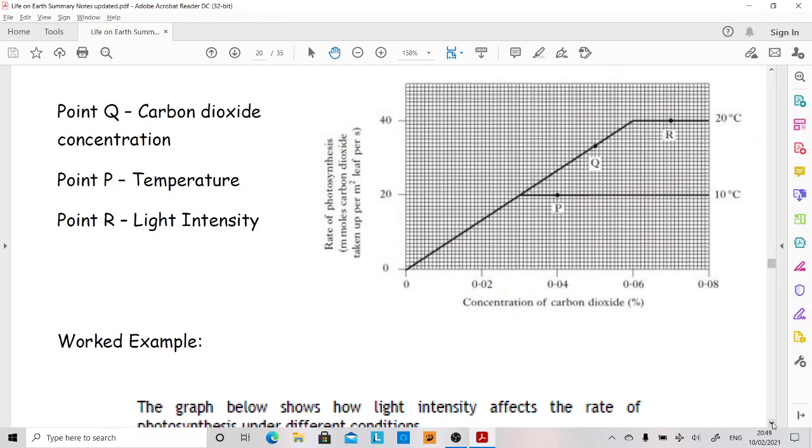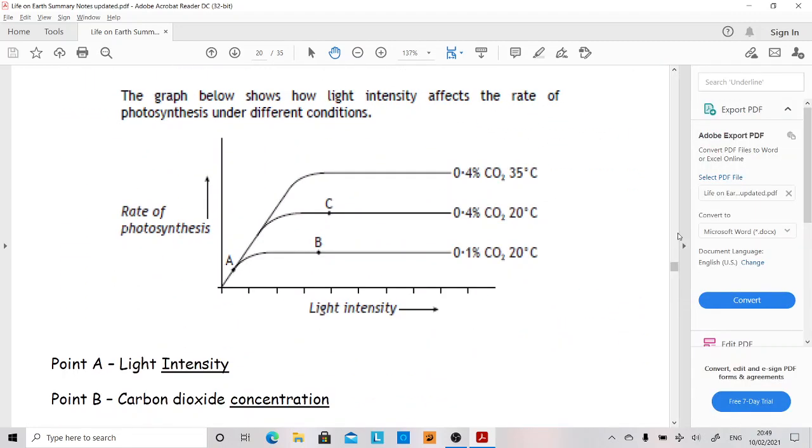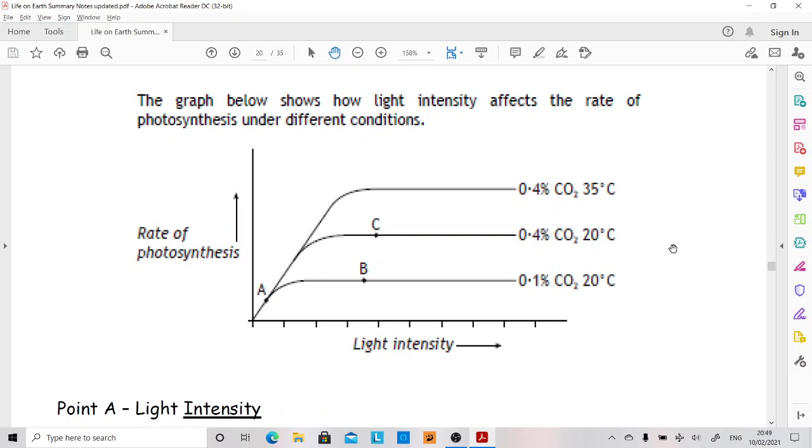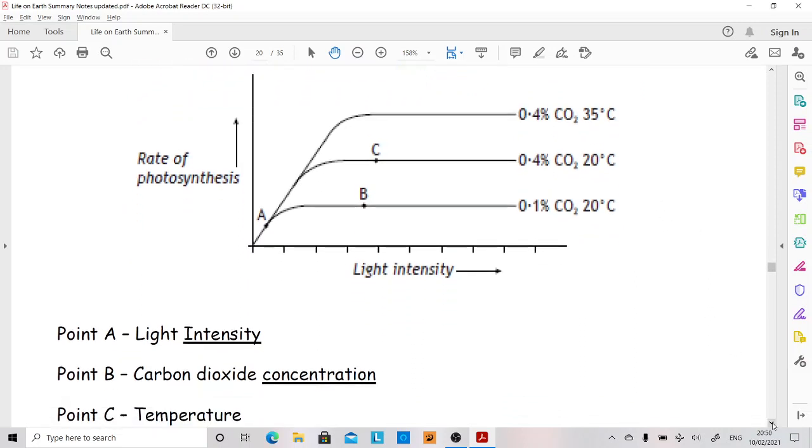This last one is the one I think is most realistic for National 5 exam question. So light intensity is increasing along the bottom. Here's the slope bit of the graph. Light intensity is the limiting factor because as we increase light intensity, rate of photosynthesis is getting better.